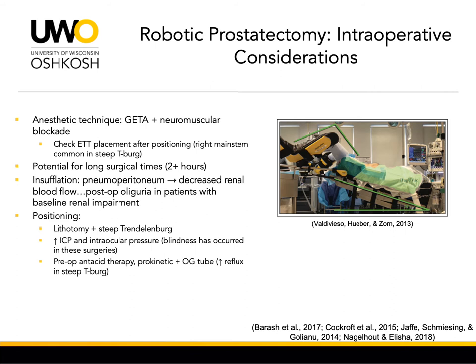Robotic approaches to prostatectomy are gaining popularity due to less pain, shorter length of stay, faster recovery, and increased patient satisfaction. The required anesthetic technique is a general endotracheal tube anesthetic with neuromuscular blockade. Many of the complications related to the robotic approach are due to the lithotomy and steep Trendelenburg position required for the surgery. Complications include an increase in ICP and intraocular pressure. The patient should also be considered for antacid therapy, a prokinetic, and an intraoperative OG tube, as there is an increased reflux risk in steep Trendelenburg. Some patients are unable to tolerate steep Trendelenburg due to hemodynamic, cardiac, or pulmonary issues. There is an encroachment of abdominal contents onto the diaphragm in this position, which has significant effects on respiratory function, especially in obese patients.